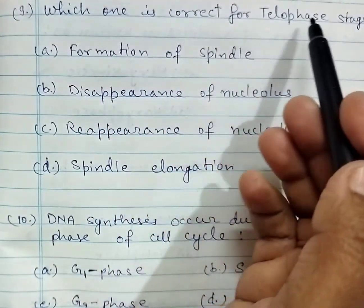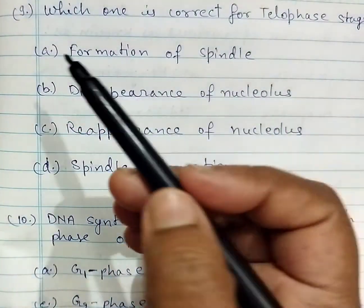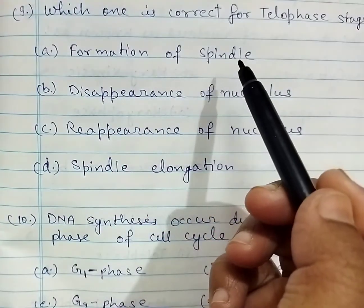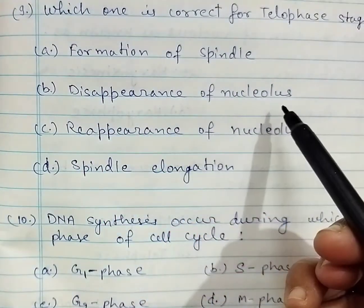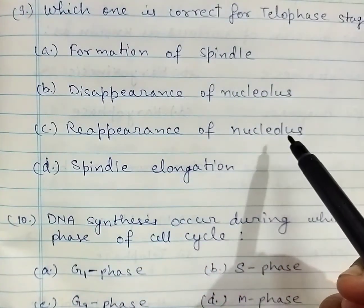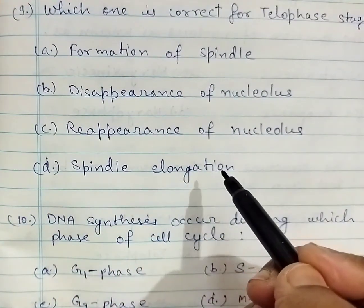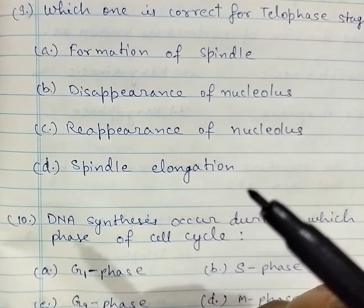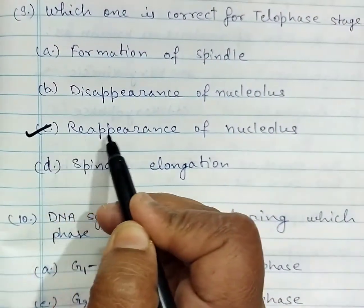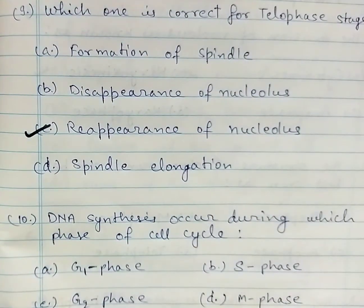Question number nine: which one is correct for the telophase stage? A: formation of spindle, B: disappearance of nucleolus, C: reappearance of nucleolus, D: spindle elongation. The correct answer is C: reappearance of nucleolus.